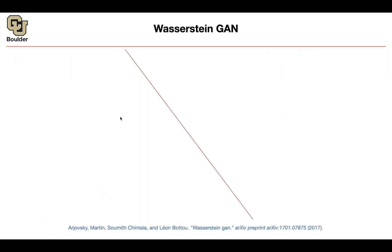So we learned about a regular GAN. We learned about least squares GAN. And these were giving us different distances, different divergences. There is another one: Wasserstein GANs. And let's go through that.